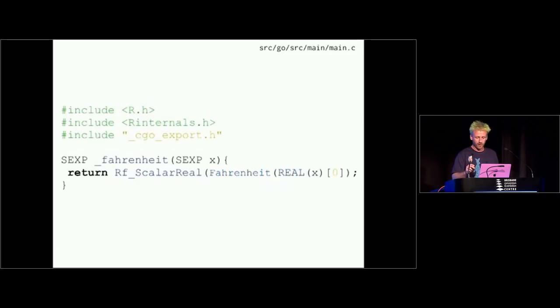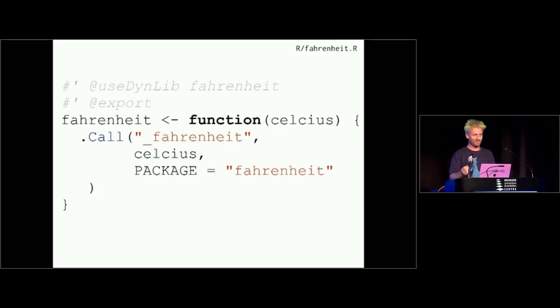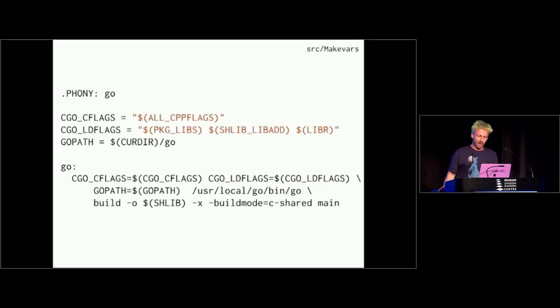So that's Go code. Then on top of that, I need some C code with a C API of R. That speaks for itself. So you are calling the Fahrenheit function. That's the one in the main package. And then you return that into a scalar to the R side. You need an R function to call that C function that calls that Go function that calls that Go function. Are we having fun? Then you need to play with the makefiles so that you invoke the Go compiler to compile your Go code into your package.